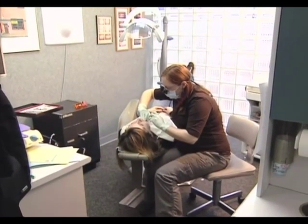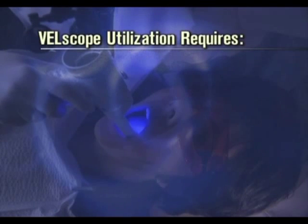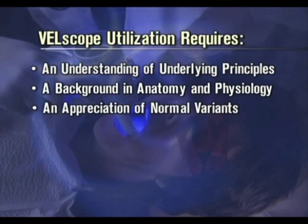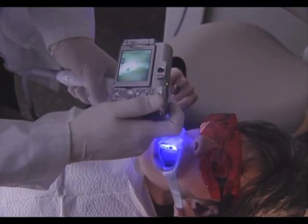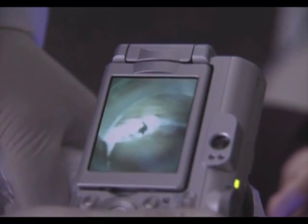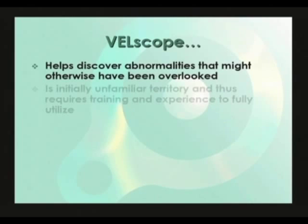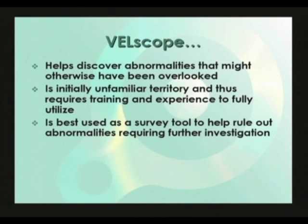While radiography provides indirect visual images of human tissue displayed on a computer monitor or radiographic film, VELscope uses direct real-time visualization of the tissue. Similar to radiographic interpretation, VELscope utilization requires an understanding of underlying principles, a sound background in anatomy and physiology, and an appreciation of normal variants. To summarize: VELscope helps discover abnormalities that might otherwise have been overlooked, is initially unfamiliar territory requiring training and experience, and is best used as a survey tool to help rule out abnormalities requiring further investigation.